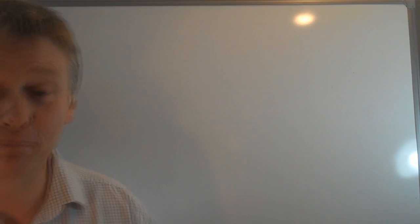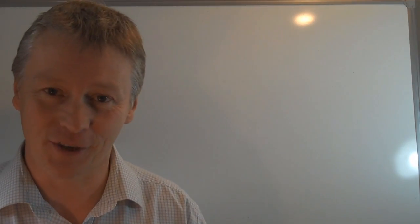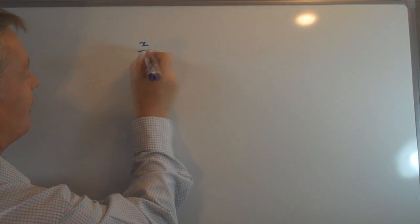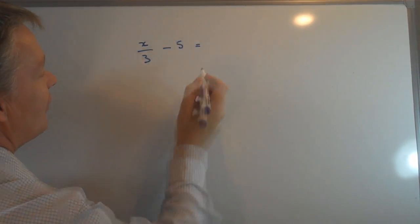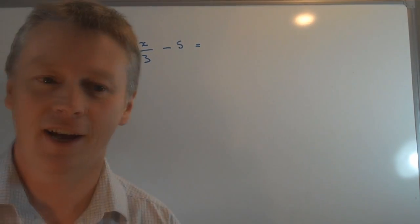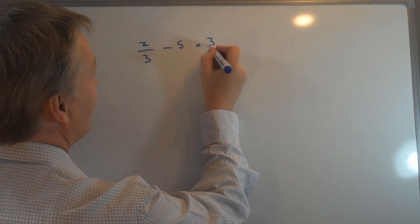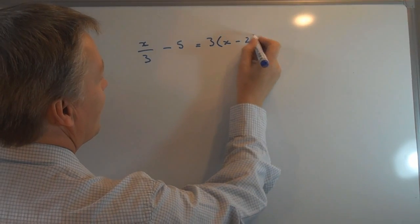This is around a grade B GCSE question and it's going to be presented something like this: x over 3 minus 5 equals 3 times x minus 2.